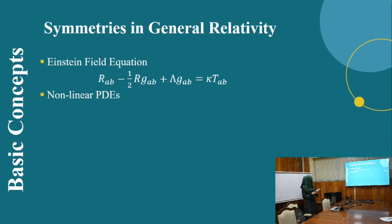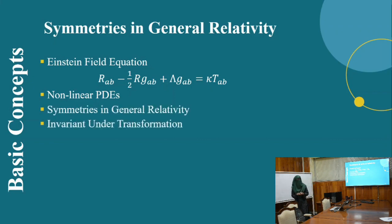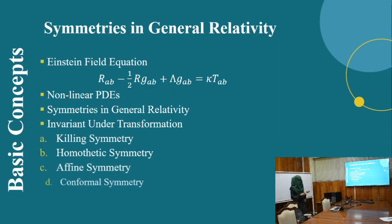Mathematically, an object is said to be symmetric in nature if it remains invariant under that transformation. In general relativity, we have different types of symmetries: Killing symmetry, homothetic, affine symmetry, conformal symmetry, and many more. I will only discuss conformal symmetry.